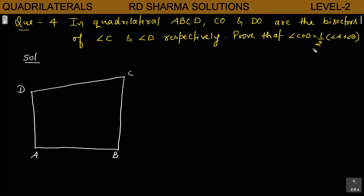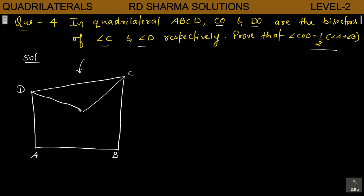तो आपको यह prove करना है और यह आपका है Quadrilateral ABCD. इस question के अंदर आपको यह भी given है कि CO and DO are the bisectors of Angle C and Angle D. That means आपको यहाँ पर Angle bisector draw करना पड़ेगा CO and DO. तो यह आपके हो जाते हैं Angle bisectors, और यह आपका O point होगा।